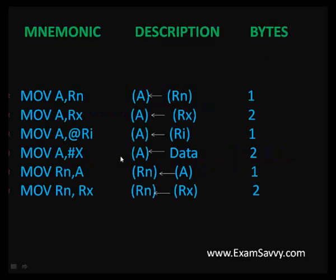An example of data transfer instruction is MOV A, Rn — where Rn refers to registers R0 to R7. In place of n we can substitute 0 to 7. Whatever register you are using, the data in that register is moved to A (the accumulator). That is the description for this instruction.